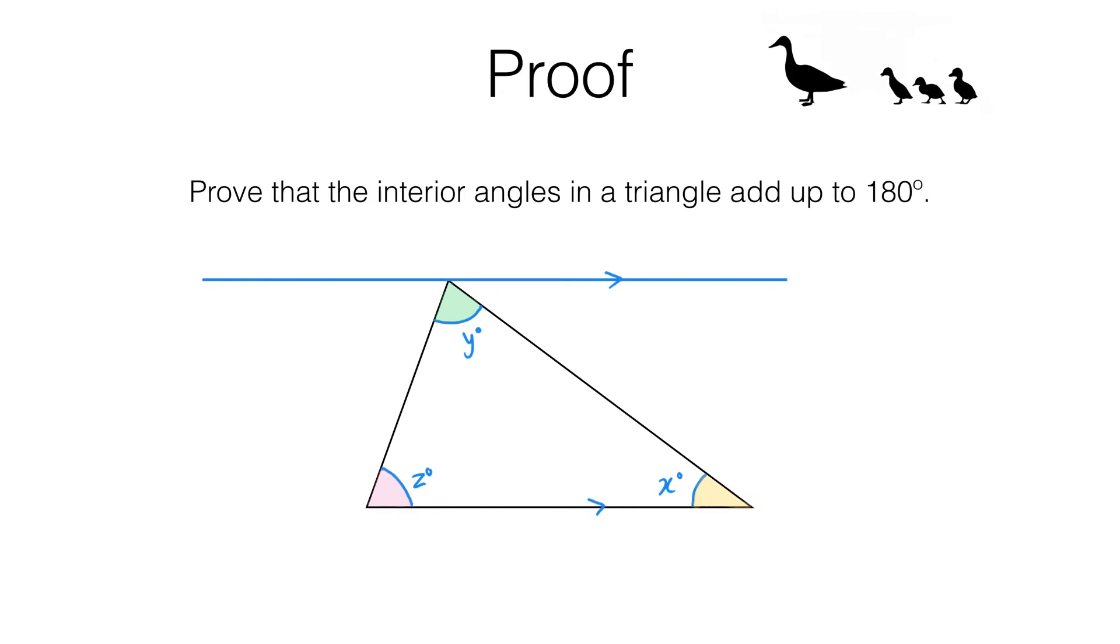Now, here we can spot some alternate angles. This angle here is equal to this angle here because we've got alternate angles. Two parallel lines, here's a transversal. So, this one and this one are the same. So, I can label this x degrees.